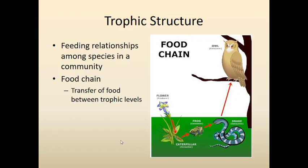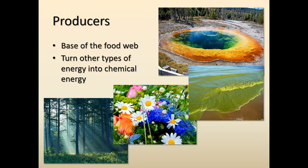I want to spend some time thinking about these different steps within the food chain. The first step within pretty much any food chain is producers — the base of a food web. What a plant does is produce energy from a different type of energy: it takes solar energy and turns it into chemical energy, specifically sugars.